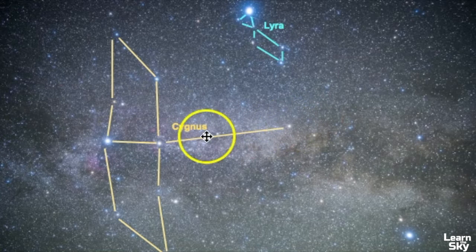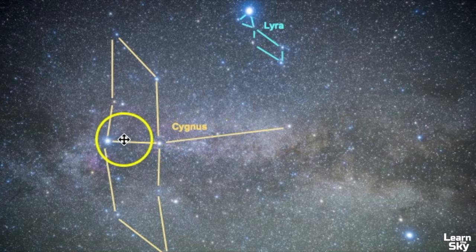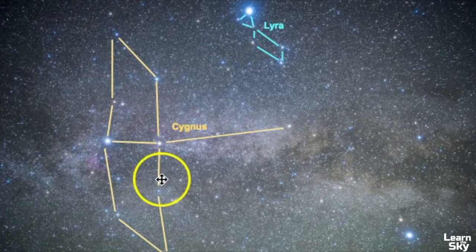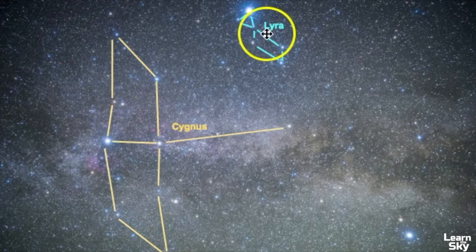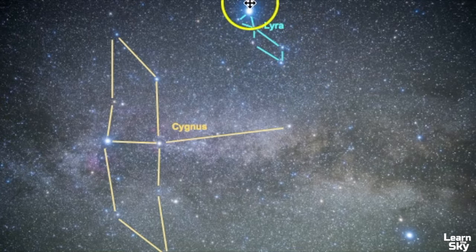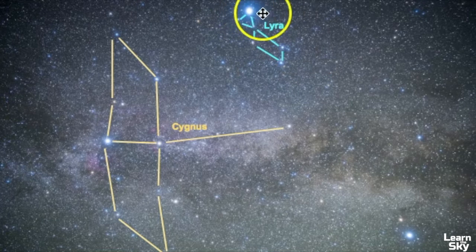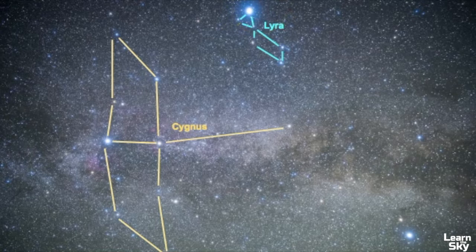You have Cygnus right here, the long neck of the Swan. You have the tail of the Swan and then the wings branch out to the side. You also have Lyra here that has that bright star Vega. That's the brightest star of the Summer Triangle asterism.